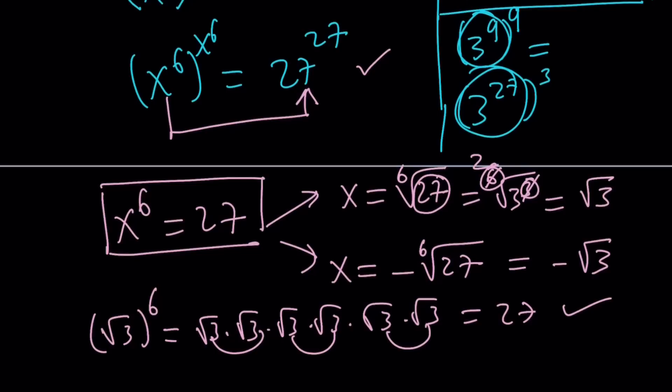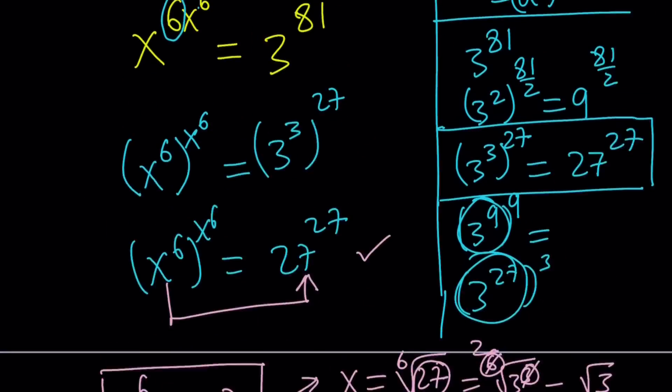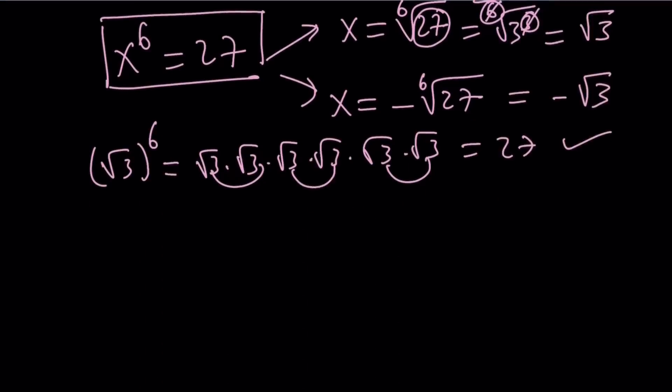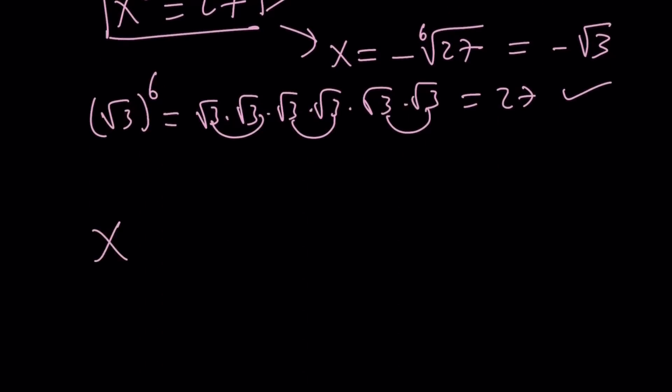But, the question is, is the negative solution also going to work? That's why we've got to check with the original problem. The original problem said x to the power 2 times x to the 6 equals 3 to the power 27. Obviously, square root of 3 is going to work. And you can also check that too.